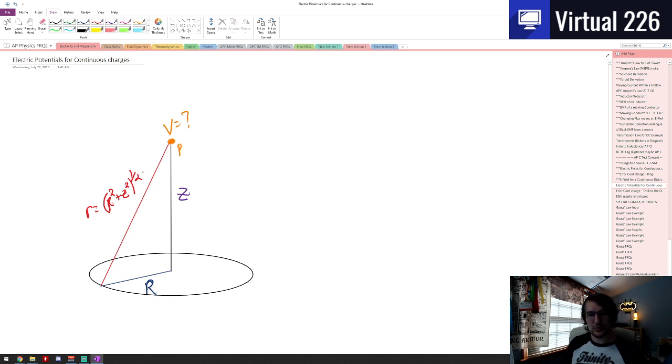And in the ring of charge video for the electric field, we looked and we saw that we could quickly state that this is a right angle, and that the hypotenuse here for r is just R squared plus z squared to the one-half power. That's just the Pythagorean theorem. So how can I get a voltage? Well, if we recall, the electric potential, the voltage, is a scalar.